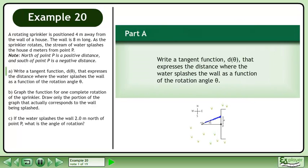A rotating sprinkler is positioned 4 meters away from the wall of a house. The wall is 8 meters long. As the sprinkler rotates, the stream of water splashes the house d meters from point P. Note that north of point P is a positive distance, and south of point P is a negative distance.